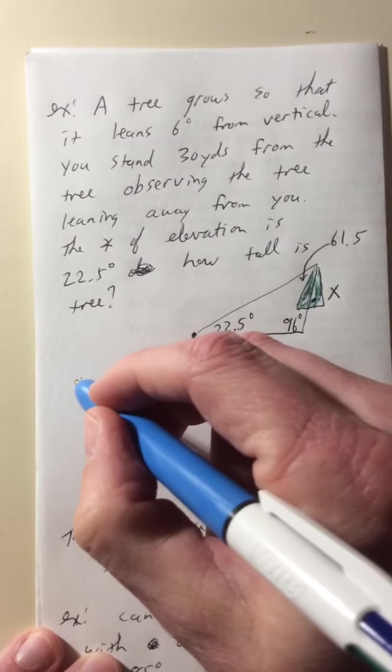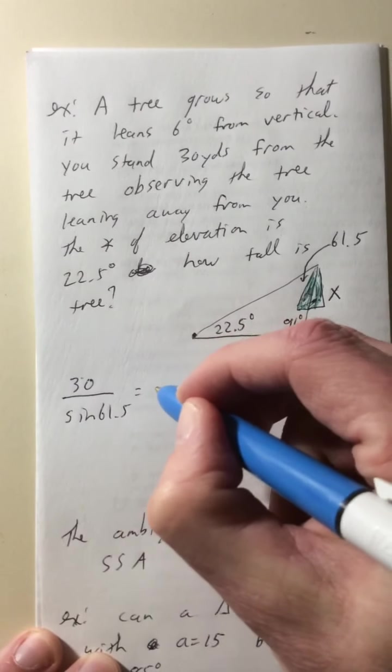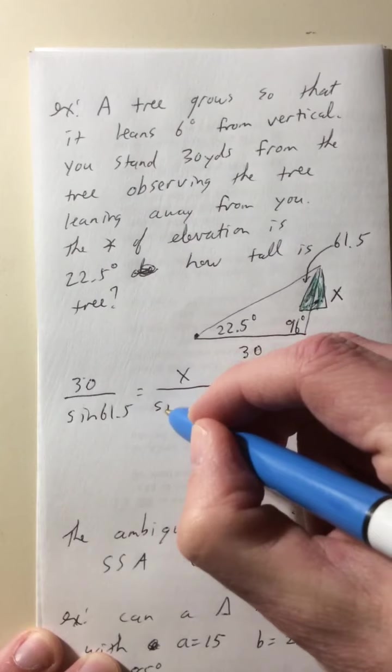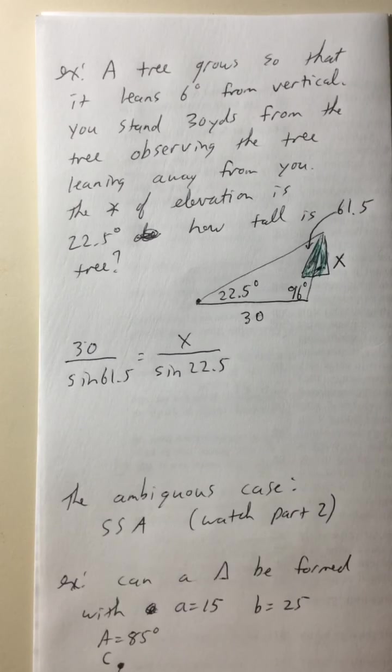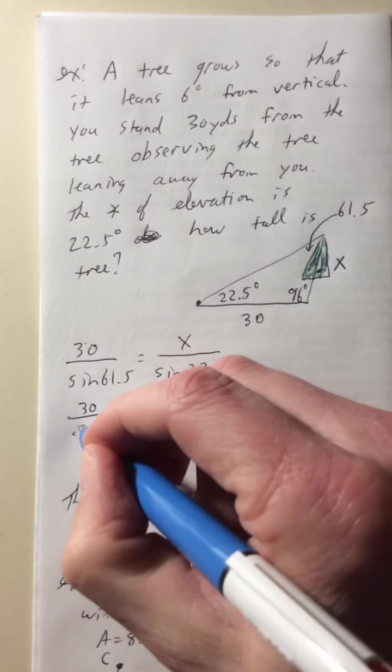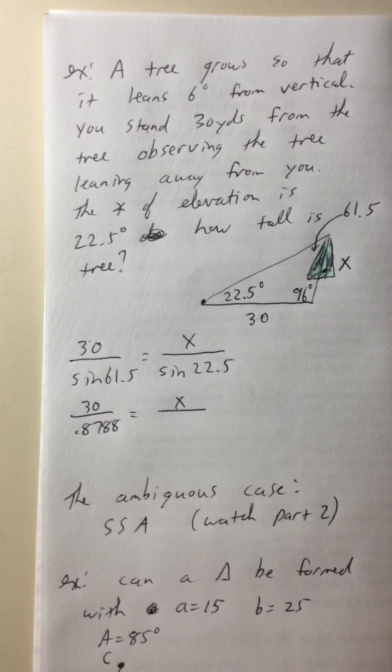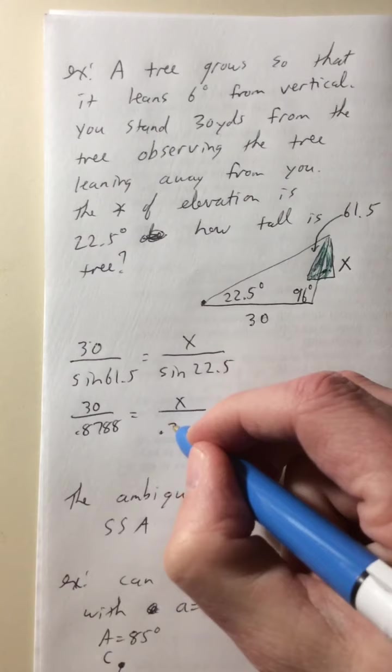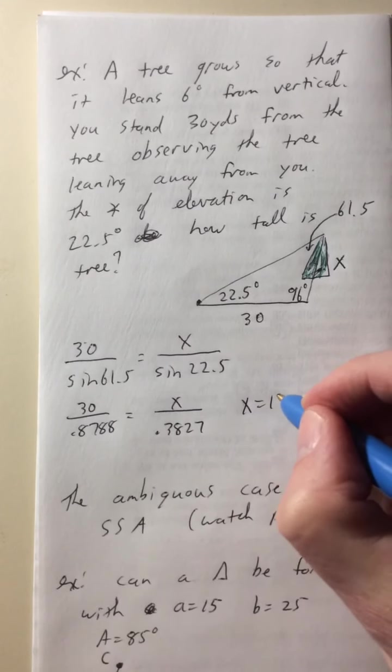So we're going to do 30 over sine of 61.5 equals x, we don't know, over sine of 22.5. So we just figure out all the stuff and cross multiply and we're done. So sine of 61.5 equals 0.8788. So 30 over 0.8788 equals x over sine of 22.5. Sine of 22.5 equals 0.3827. So then we just cross multiply and divide. So multiply that by 30 equals divide by 0.8788 equals 13.06. So x equals 13.06 yards.